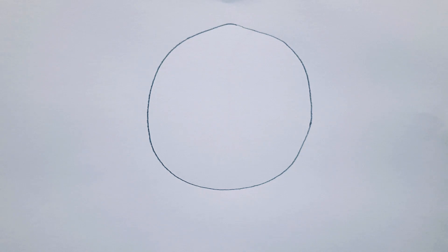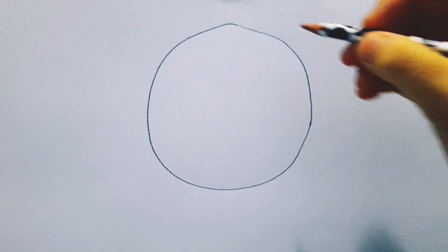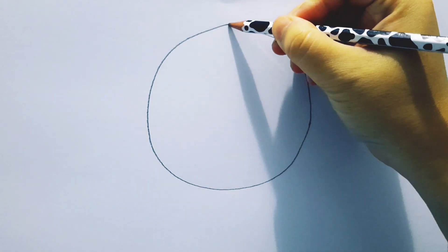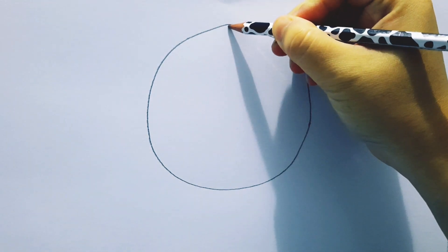First, draw a circle. It doesn't have to be perfectly round. As long as it looks like a circle, it's fine.